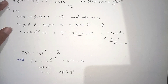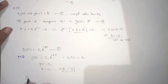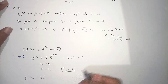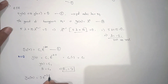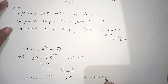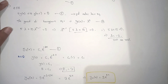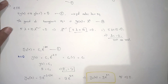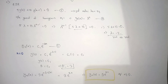Substituting C1 = 3 and λ = −2 into equation 4, the natural response of the system is y_n(n) = 3 · e^(−2n), for all n ≥ 0. This is the natural response of the system when the root is real.